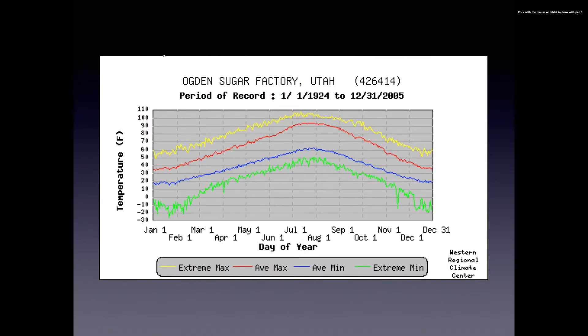I've downloaded a bunch of these from Ogden, Utah. This is a climatograph for the Ogden Sugar Factory, located in the Ogden Canyon. You can see that we again have our record highs, record lows, and then our average highs and our average lows.